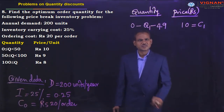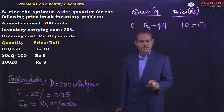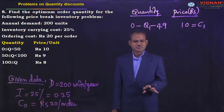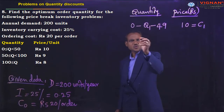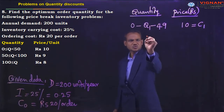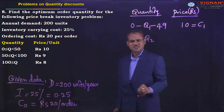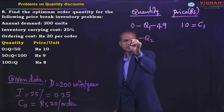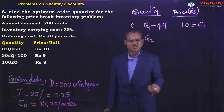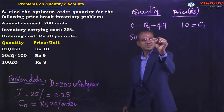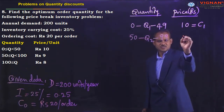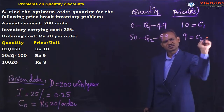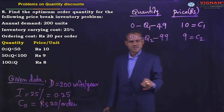For the second price break, Q2 starts at 50 and goes up to 99 (50 ≤ Q < 100). The price for this range C2 is equal to 9 rupees. This is the second price break.